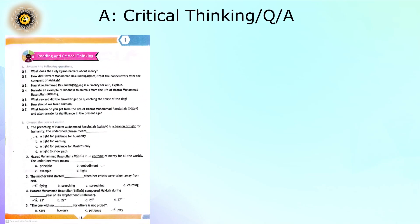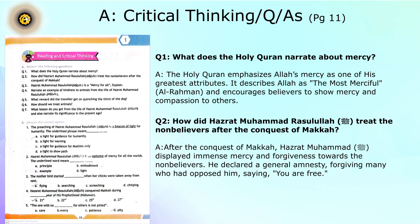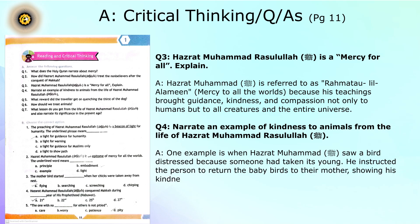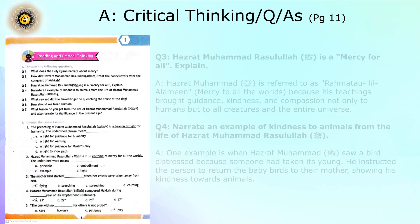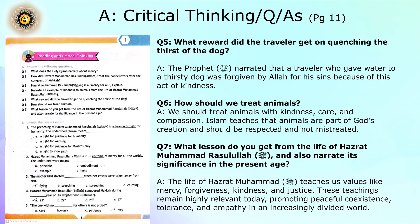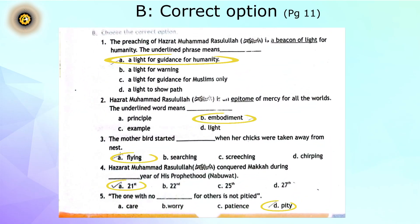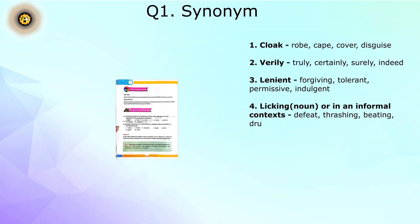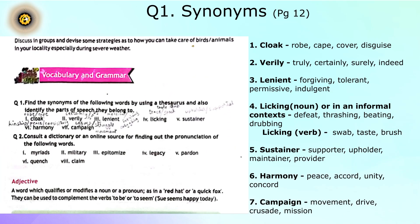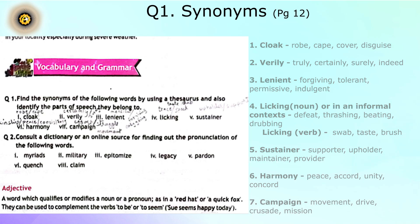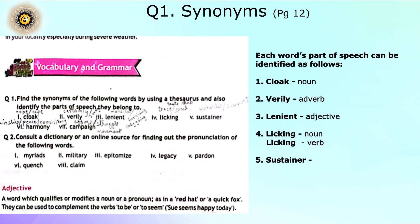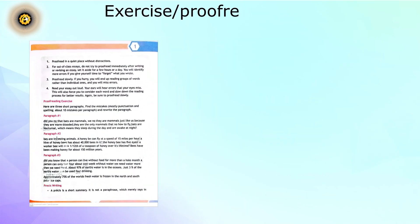Critical thinking question answers, page 11. Correct option, pages 11 and 12, question 1 synonyms. Proofreading, page 15.